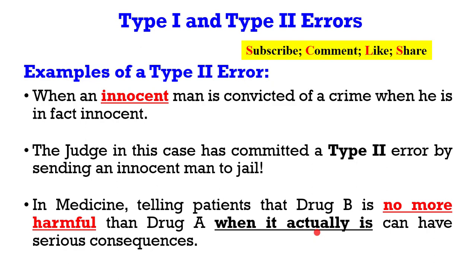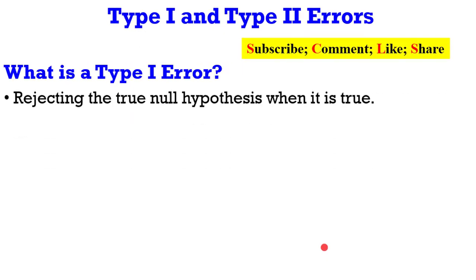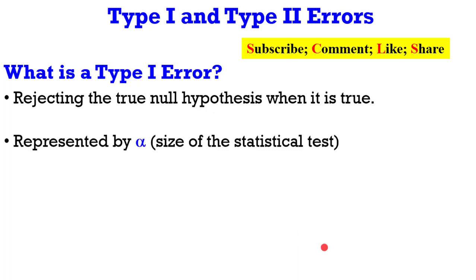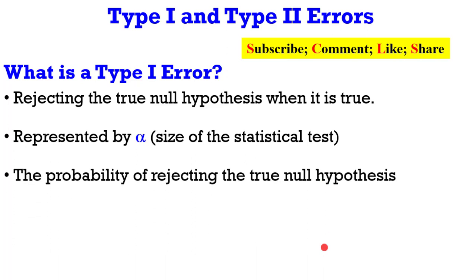These are simple examples often used in textbooks to distinguish between a type 1 error and a type 2 error. Now let's dig further on type 1 error. It is when the true null hypothesis is rejected when it is true. It is represented by alpha, also called the size of the statistical test. It is the probability of rejecting the true null hypothesis. It is also when a false positive scenario has occurred.